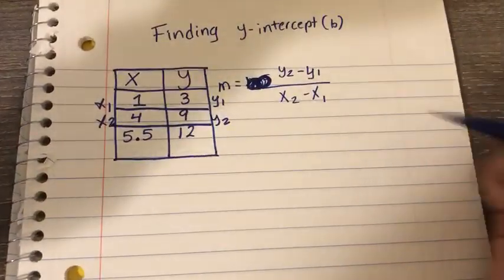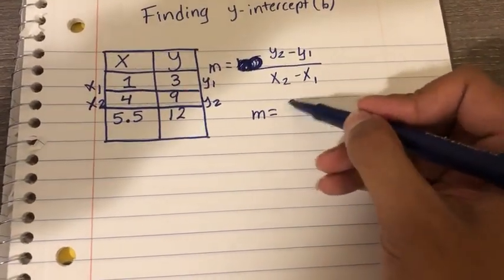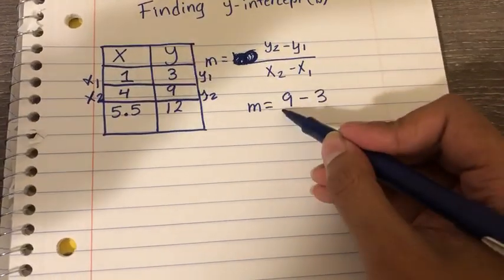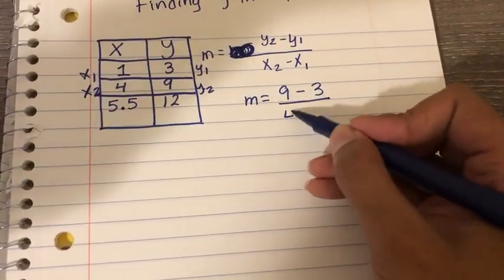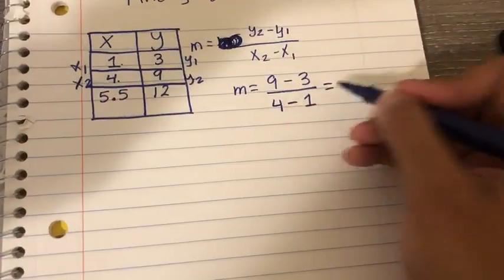Alright, then I can put these numbers in my formula. So I've got m equals 9 minus 3, y2 minus y1, divided by 4 minus 1, x2 minus x1, and I can solve this.